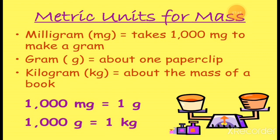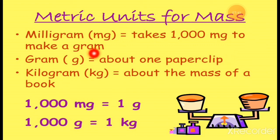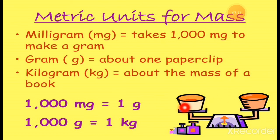Here are the metric units for mass. Milligram: it takes 1000 mg to make 1 gram. 1000 grams means 1 kg. There is also a balance-type weight machine — the heavy side will go down and the light side will go up.